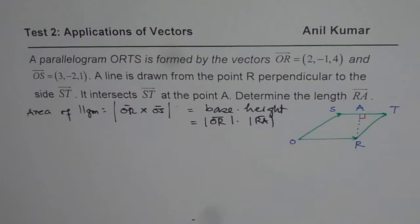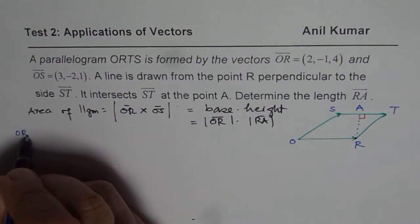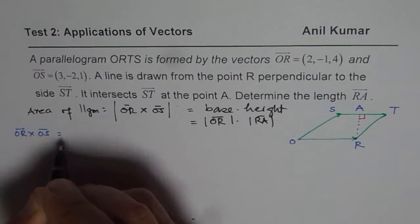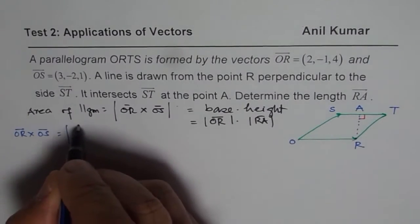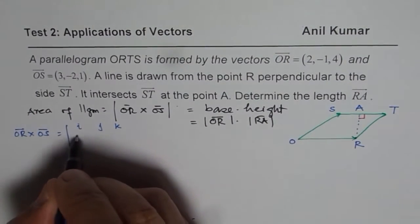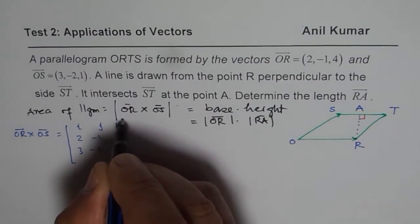So let us begin by finding the cross product of OR and OS. So we have OR cross OS. That is the first thing we have to do. So we use the matrix method. You can use the other method which you have learned also. Either way, you get the same solution. So OR is (2, -1, 4). OS is (3, -2, 1).